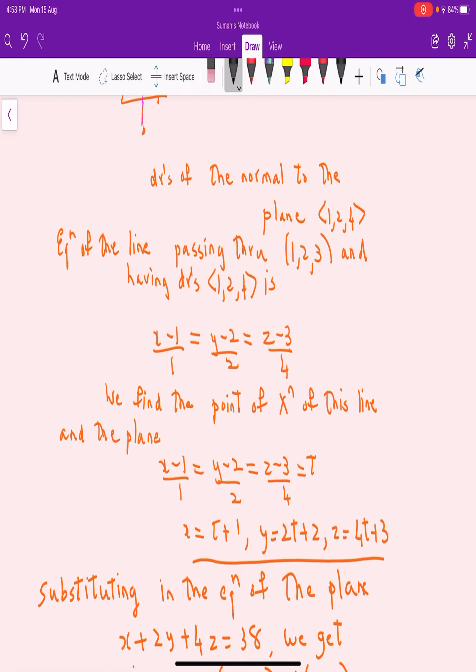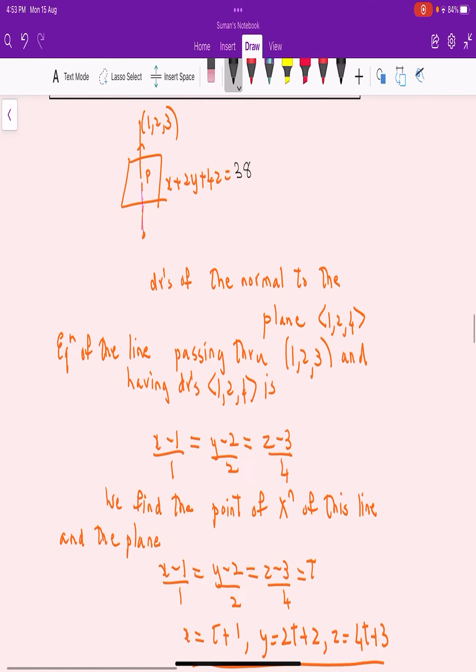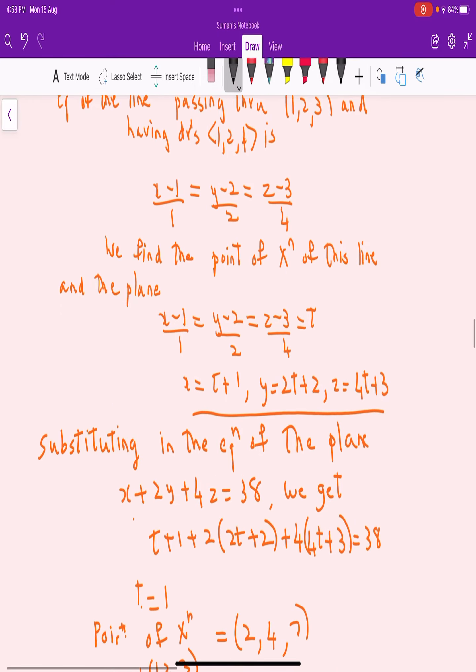So we get x = t + 1, y = 2t + 2, z = 4t + 3. Substituting in the equation of the plane x + 2y + 4z = 38.